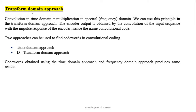In this lecture I will explain the transform domain approach to obtain the output of a given convolutional encoder. From signals and systems we are familiar with this concept: convolution in the time domain is equivalent to multiplication in the spectral or frequency domain. We use this principle to obtain the output of the encoder in the transform domain approach.